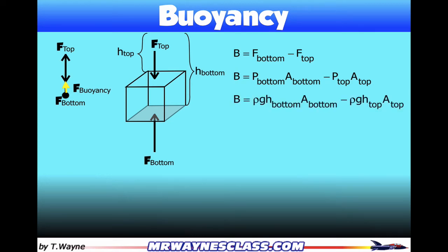So the buoyancy force is equal to rho g h bottom times the area of the bottom minus rho g h top times the area of the top.